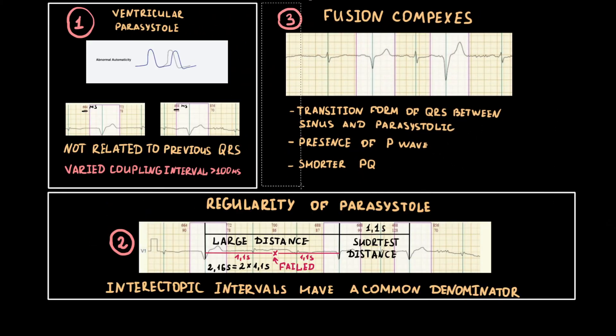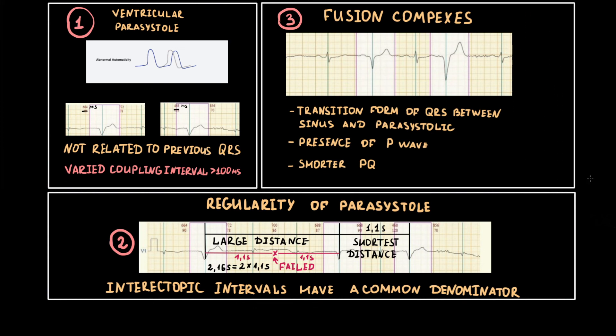In summary, there are three criteria of ventricular parasystole: first, varying coupling interval greater than 100 ms; second, a common denominator of interparasystolic intervals; and third, the presence of fusion beats.